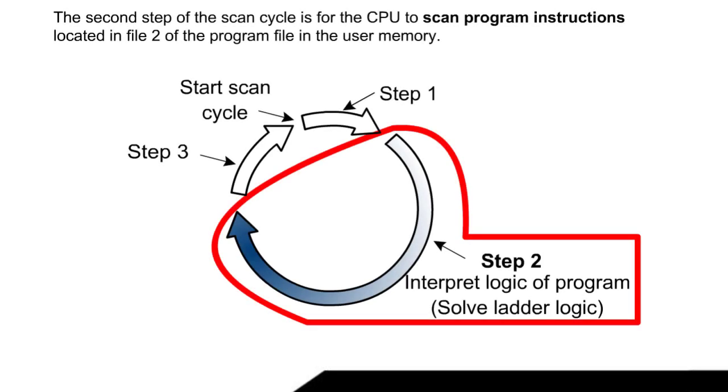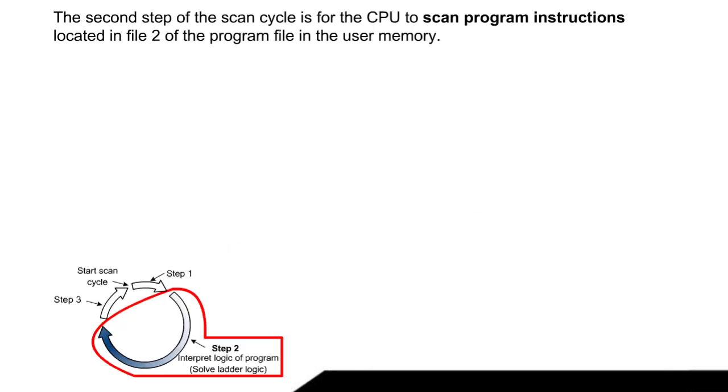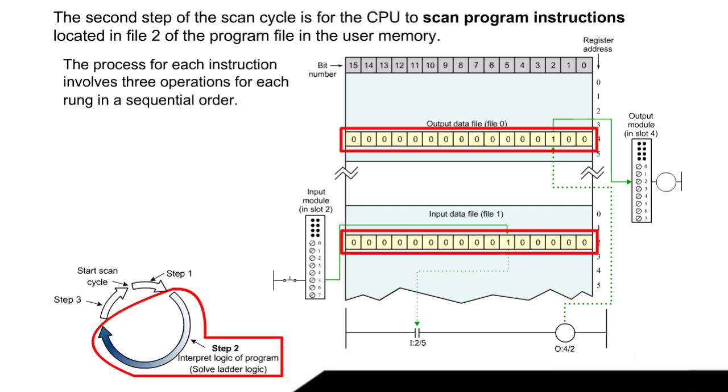The second step of the scan cycle is for the CPU to scan program instructions located in file 2 of the program file in the user memory. The process for each instruction involves three operations for each rung in a sequential order.